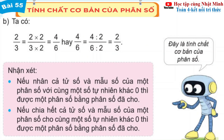Ta có 2 phần 3 bằng 2 nhân 2 bằng 4, và 3 nhân 2 bằng 6. Thì 2 phần 3 nhân với 2, chúng ta nhân cả tử số và mẫu số, chúng ta được 4 phần 6.